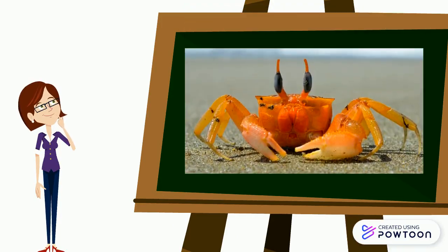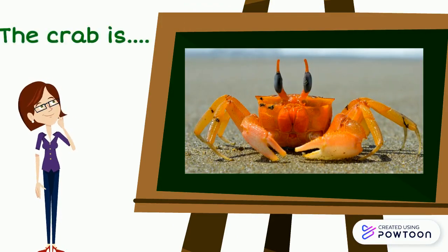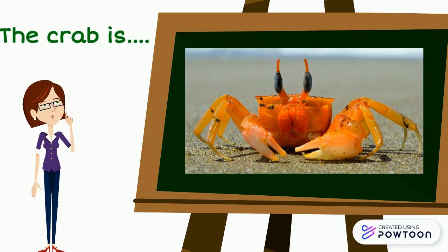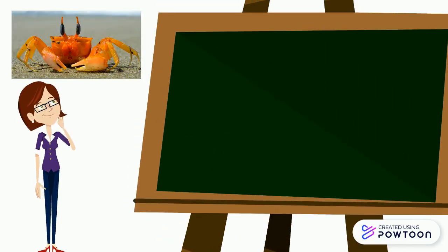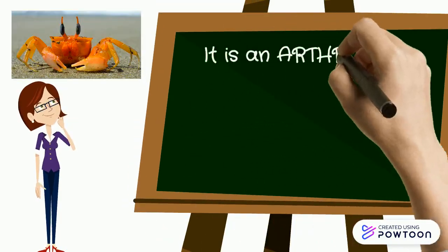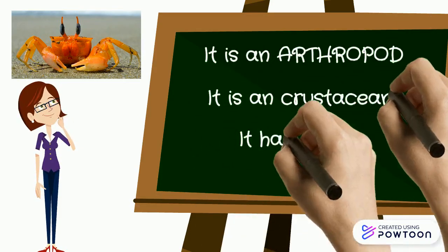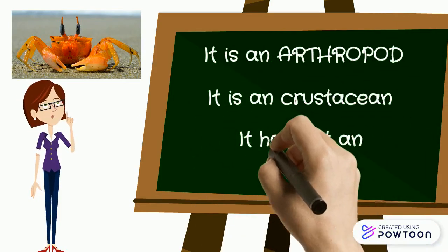And what about the crab? What kind of invertebrate is it? The crab is an arthropod. It is a crustacean and it has got an exoskeleton.